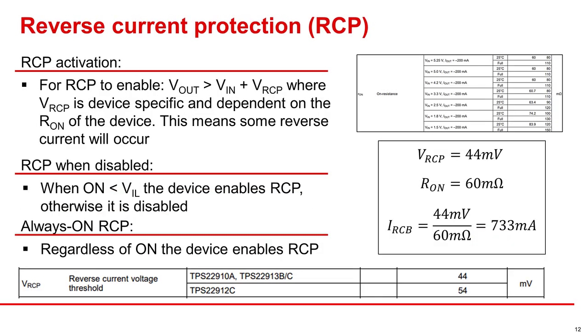Load switches may have reverse current protection, which will require a voltage drop from VOUT to VIN of some specified value for the reverse current protection to engage. Because of this, it will allow some reverse current to flow. Typically, the larger the R-on of the device, the less reverse current that is allowed. You can see in the example on the right how this works.